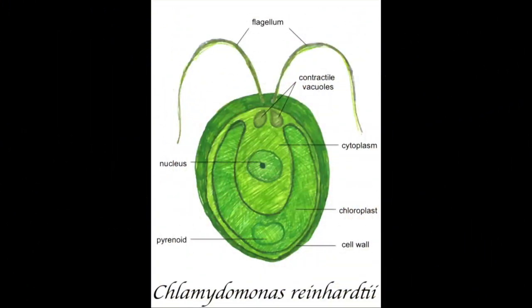Chlamydomonas reinhardii is a unicellular algae that has a large pyrenoid and a chloroplast. It is double flagellated and the cell wall is composed of a combination of carbohydrates and polypeptides. Contractile vacuoles help expel any of the fluid out of the cell. Typically, this algae will reproduce asexually.